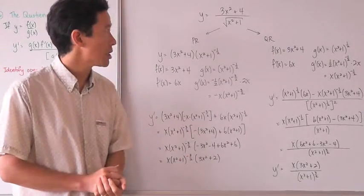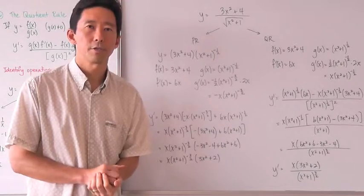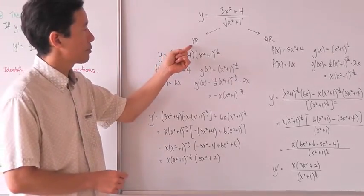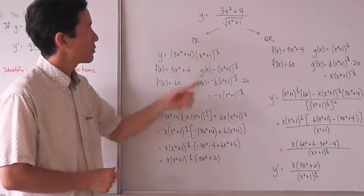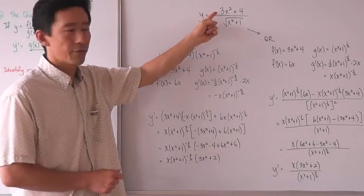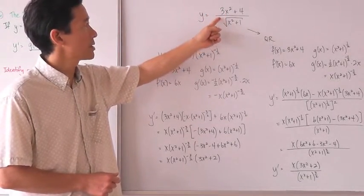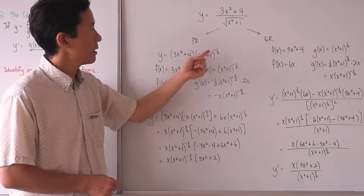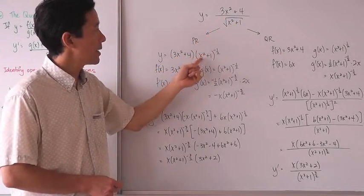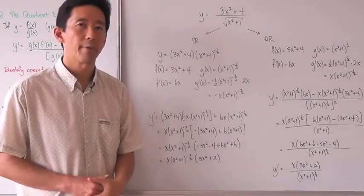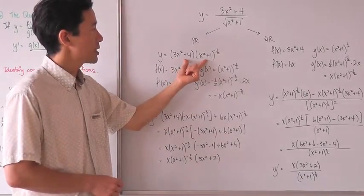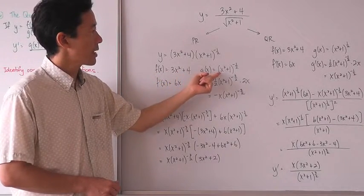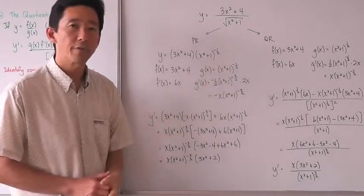We cannot use the simple rules of differentiation for this, but interestingly you can use the product rule to come up with the same derivative. Let's look at the product rule approach first. This form is a quotient rule form. To change it so we can use the product rule, we rewrite the denominator as x squared plus 1 raised to the negative one half power. Now we have the product of two functions. So f of x is equal to 3x squared plus 4, and g of x is equal to x squared plus 1 raised to the negative one half power.